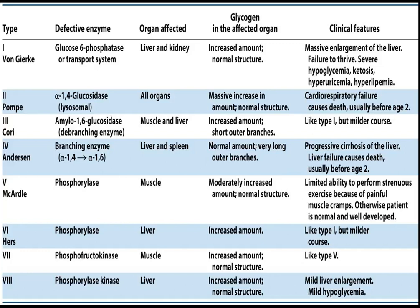The first one, Type 1, is Von Gierke disease. Then Type 2 is Pompe, Type 3 is Cori, Type 4 is Anderson, Type 5 is McArdle, Type 6 is Hers, and then Types 7 and 8.